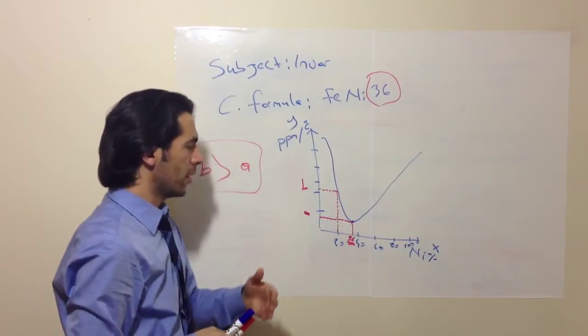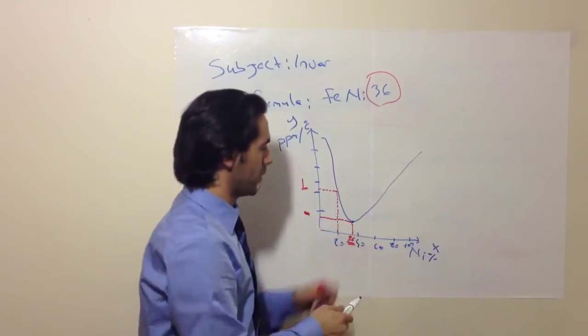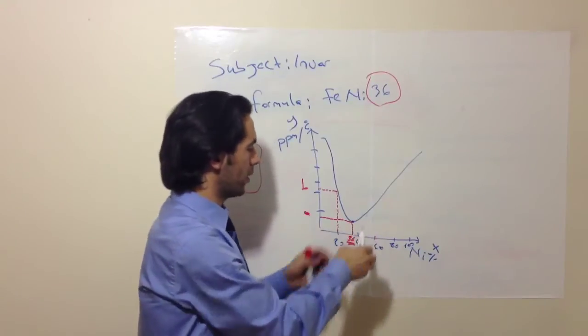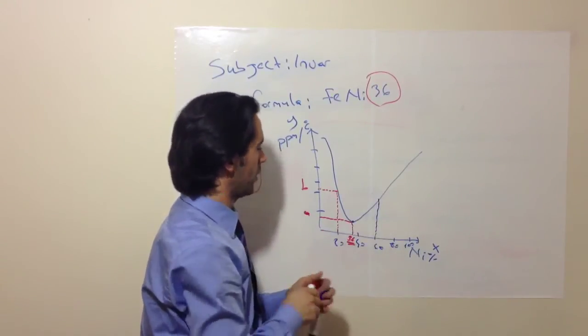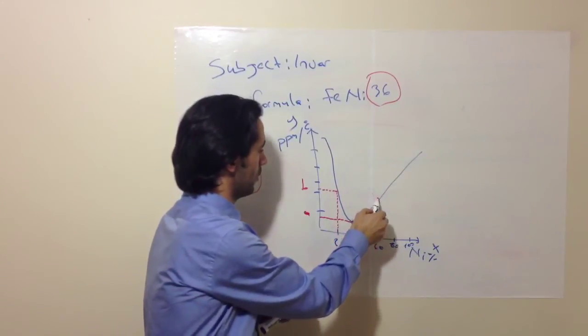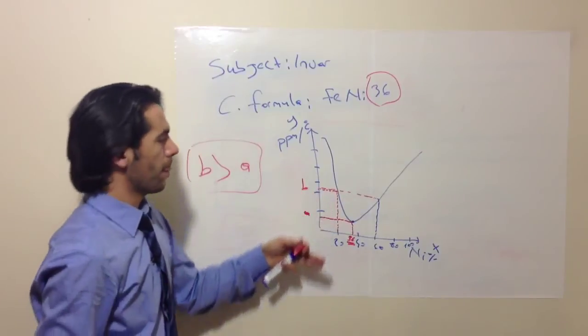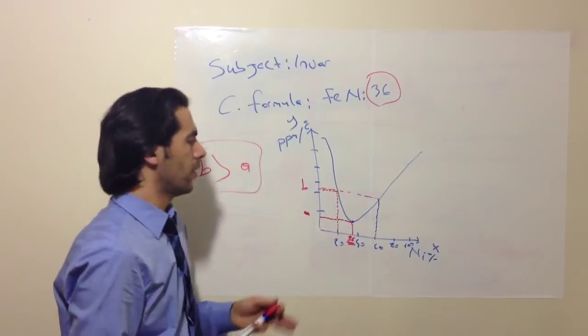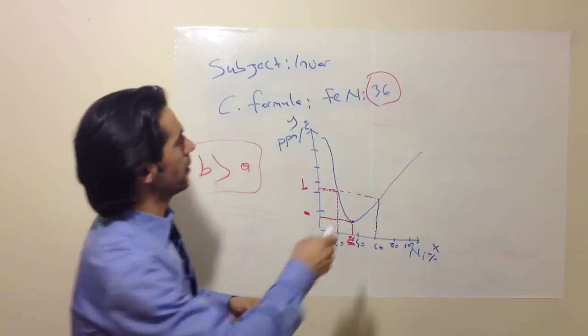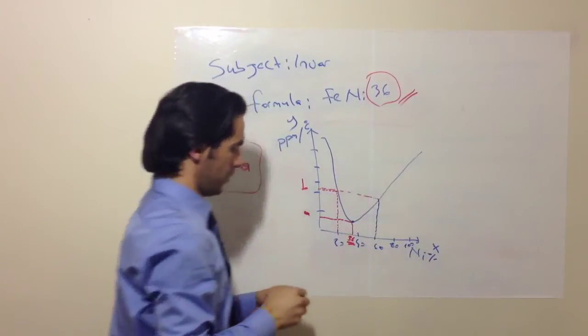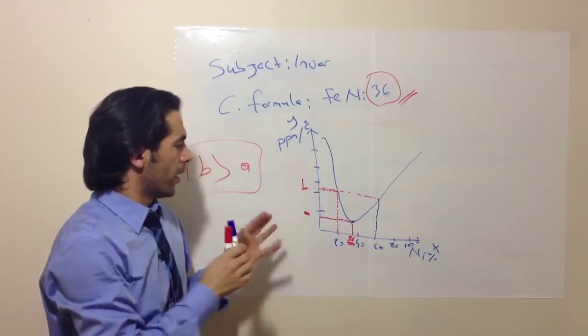After 36, if we increase the amount of nickel, such as we add 60% nickel in our alloy, let's show it with a red one. You see, again, the thermal expansion rate went up. So that's why 36 is the special number for us.